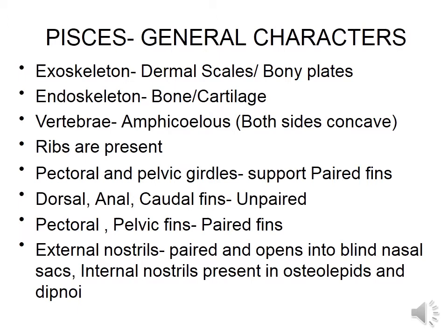Exoskeleton is made out of dermal scales or bony plates. Endoskeleton is by bones or cartilages — bones in the case of Osteichthyes and cartilage in the case of Chondrichthyes. Vertebrae are amphicoelous: each vertebra has a central thick mass known as the centrum, which has concavity on both sides, hence called amphicoelous.